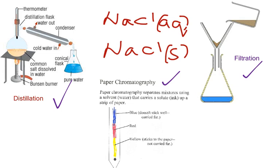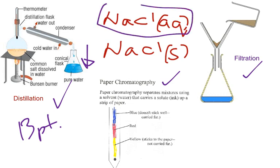Distillation separates things by the difference in their boiling point, so the substance with the lower boiling point comes over first. For example, with salt water — NaCl(aq), meaning NaCl dissolved in water — that's a mixture. You can separate salt water using distillation: the water comes over, and the salt gets left behind.